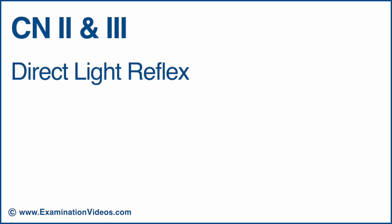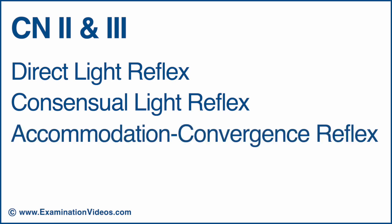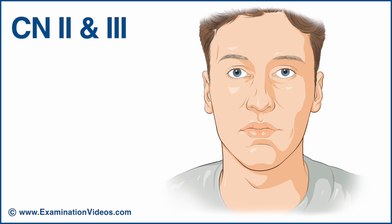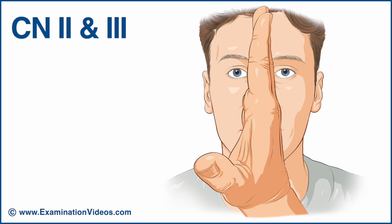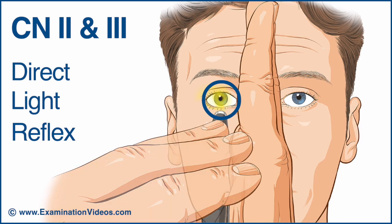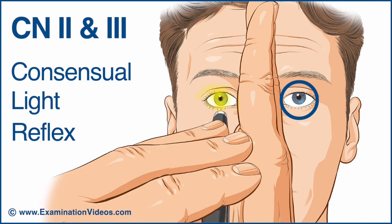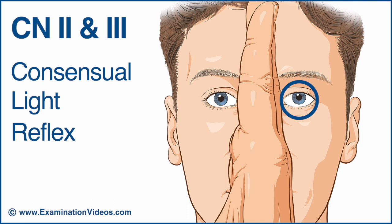To test cranial nerves 2 and 3, examine the direct light reflex, the consensual light reflex, and the accommodation convergence reflex. Dim the lights and ask the patient to look at a point on the wall behind you. Place one hand vertically along the patient's nose to confine the light to one eye. To test for the direct light reflex, shine a bright light into the right eye and observe for pupillary constriction in that eye. To test for the consensual light reflex, shine the light again into the right eye, but this time observe for pupillary constriction in the left eye.